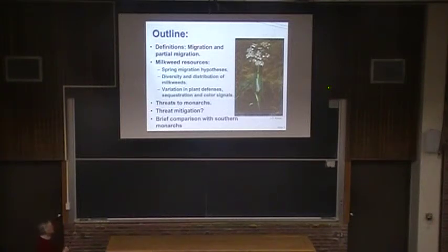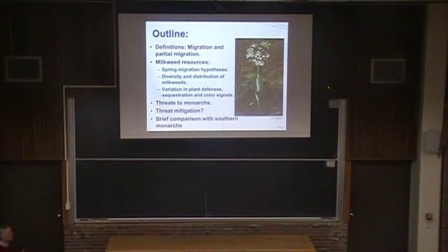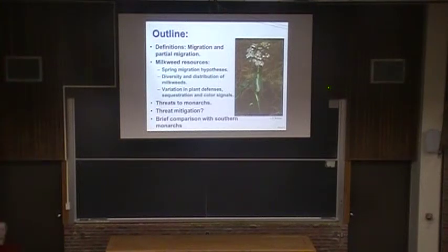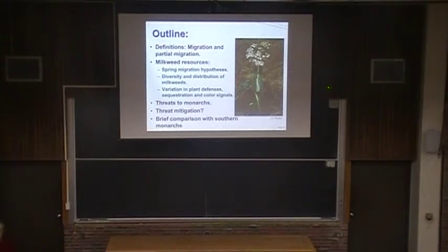I'm going to look at a couple of hypotheses we tested and give you three sets of evidence we collected to work out what monarchs are doing in time and space in relation to the diversity and distribution of milkweed resources their caterpillars are feeding on in North America. Then I'll talk about what interests me — the variation in plant defenses, the chemicals that plants are producing. Plants are rooted to the spot, so they're sitting ducks for anybody who wants to eat them. What do plants do? They've got toxins.